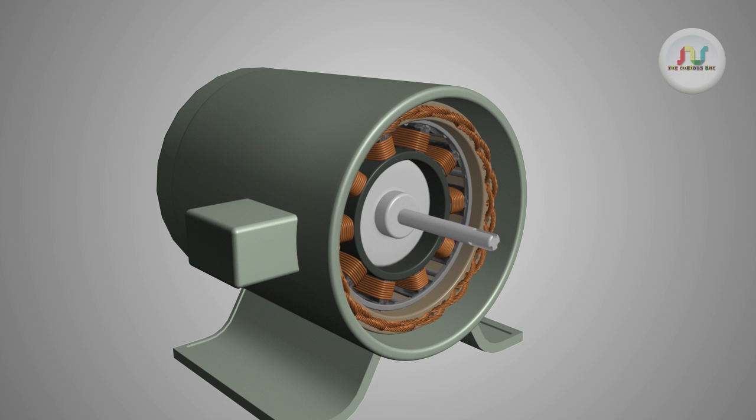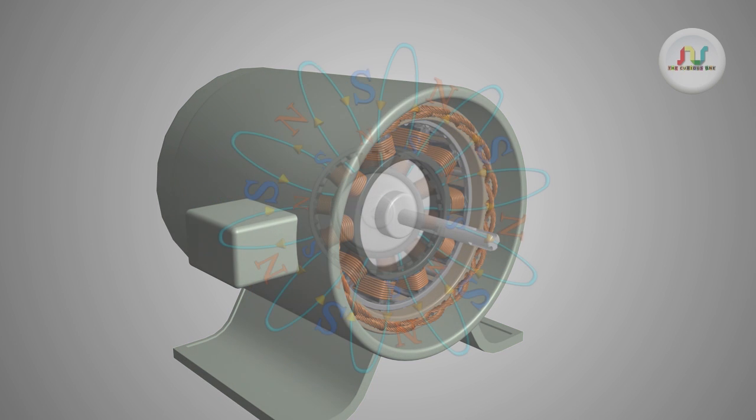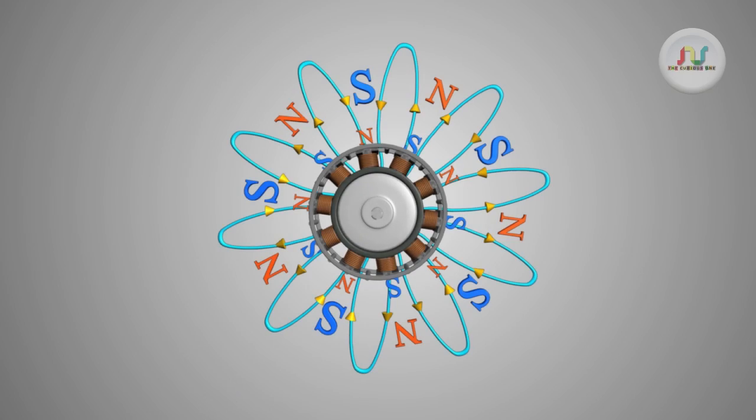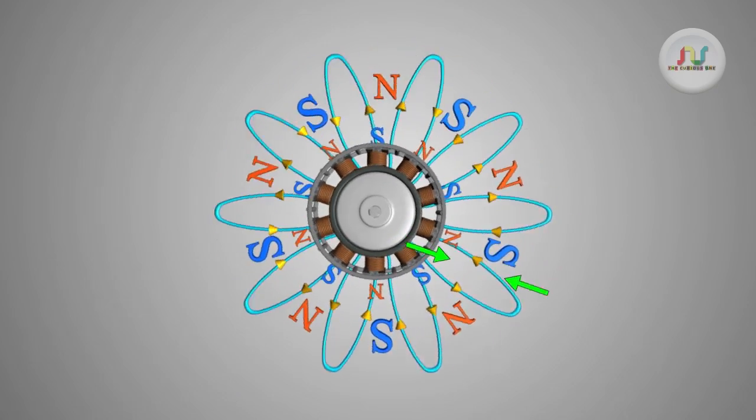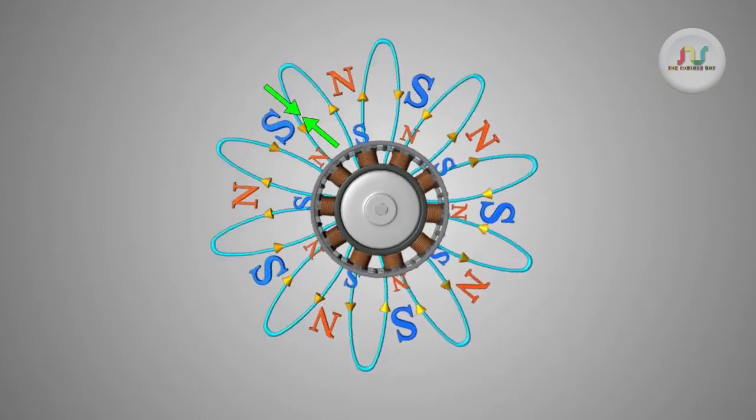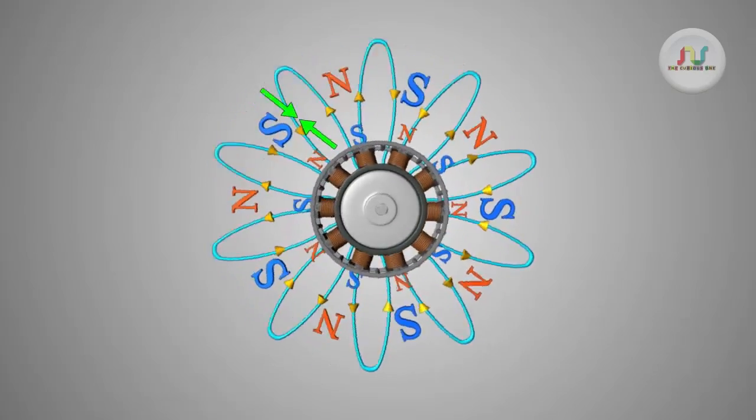When the rotor achieves its maximum speed, the rotor field coil is energized. Then poles of rotor get locked with poles of RMF and start rotating at synchronized speed.